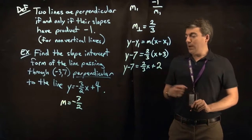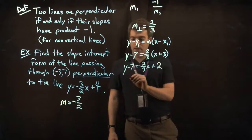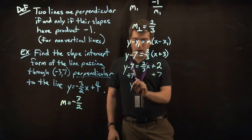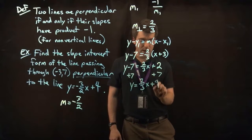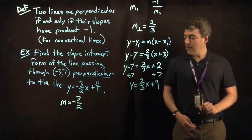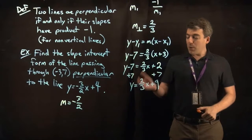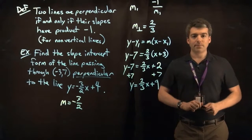All right, and now we need to get the y by itself, so we'll add 7. So we have y equals 2 thirds x plus 9. There we have the slope intercept form of the line that is perpendicular to our given line passing through the point negative 3, 7.